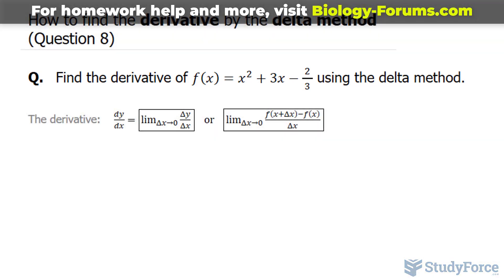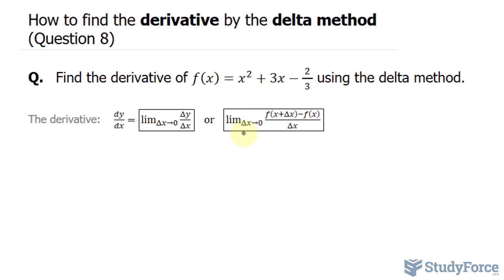The first thing that I want to do is substitute this expression, x plus delta x, everywhere where I see an x. And that will serve as this part of our limit. So I have x plus delta x, and I'm raising that to the power of 2, so I substituted x plus delta x into here, plus 3 bracket x plus delta x. I substituted this into there, minus 2 over 3.